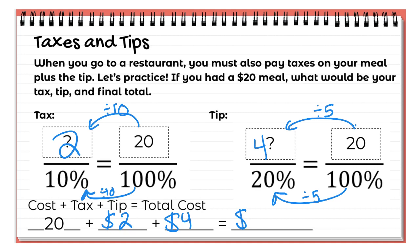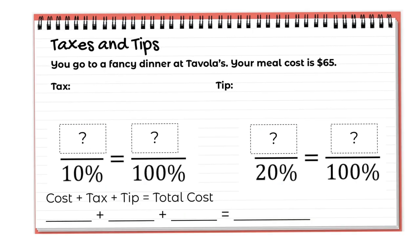Before I leave the restaurant, I'm going to be paying $26 total — that's $20 meal plus $2 tax plus $4 tip. This is your last slide to do on your own. Do it exactly like we did the last problem. This time your meal is going to cost you $65.